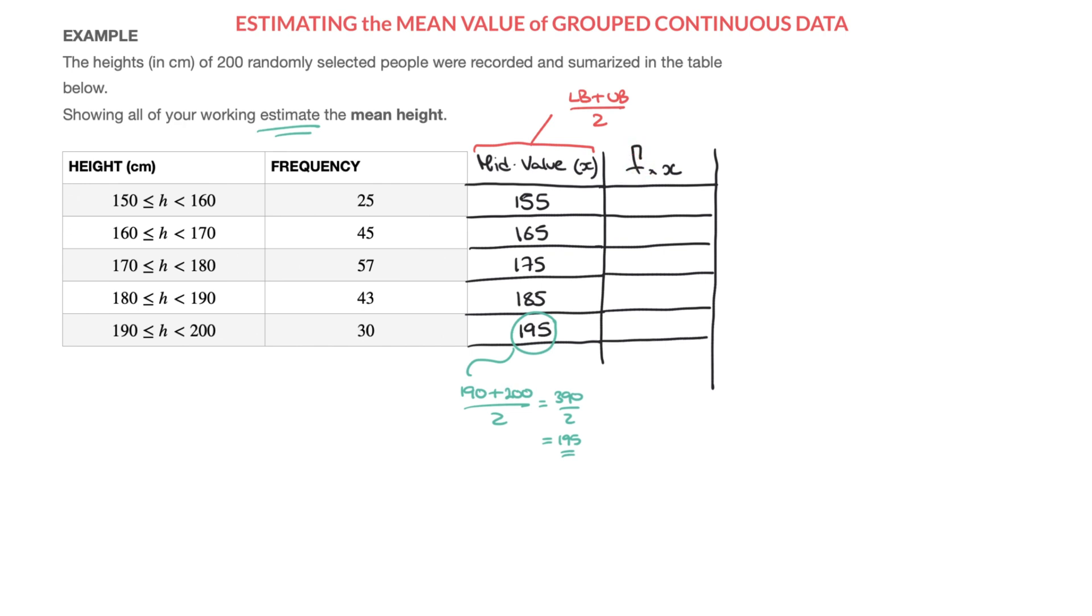Now, the f that I've written here corresponds to the frequency, and in fact I could add in parentheses here f. The x that I've written here corresponds to the various mid-values we just found. And so for this cell here on the first row, when I write f times x, we need to calculate the frequency on that row, so 25, times the mid-value of that row. So that's 155.